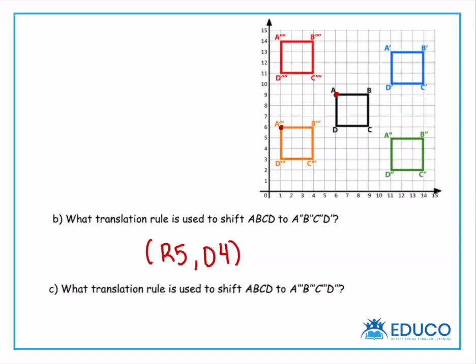So let's count. I move 1, 2, 3, 4, 5 boxes to the left. Left 5. And I move 1, 2, 3 boxes down. And that's our translation rule for the second question. Again, you can always double check any of these by picking another point and comparing it to the same point on your translated image.